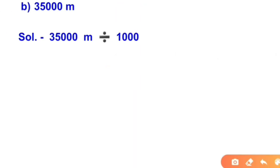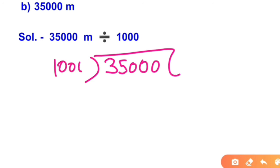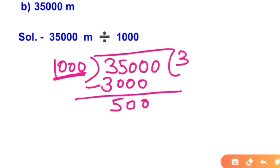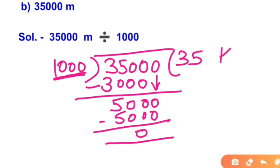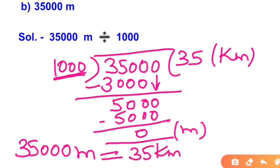And now the second part is 35,000 meters. How many kilometers and how many meters? So 35,000 we divide by 1,000. This is a 4-digit number. The 1,000 table's nearest number is 3,000. 3,000 minus 3,000. Now 500, bring down the next number. 1,000 table: 5,000. 5,000 minus 5,000 is 0. So this will be the kilometers and this will be the meters. The answer is 35,000 meters equals 35 kilometers and 0 meters.